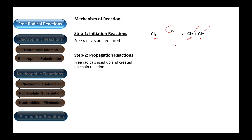The second step is called propagation reactions. During this step, free radicals are used up and created, starting a kind of chain reaction. Because free radicals are very reactive, they try to snatch electrons from normal molecules. For example, the chlorine free radical reacts with a methane molecule, converting it into a methyl free radical while forming a bond with the released hydrogen to make HCl. Now chlorine is satisfied because it has made a bond with hydrogen and is no longer a free radical.